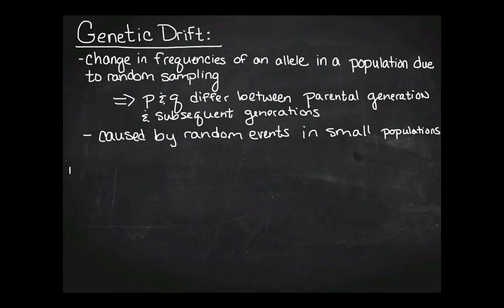It's going to be caused by random events in small populations. So let's look at a population of beads. Let's say that the dominant is red and the recessive is blue. So P is going to be the frequency of red and Q is going to be the frequency of blue. And so I've got 5 out of 10 and 5 out of 10. So P is 0.5 and Q is 0.5 in that population.